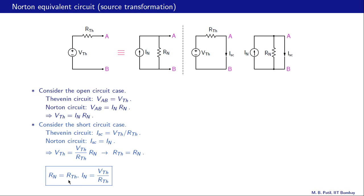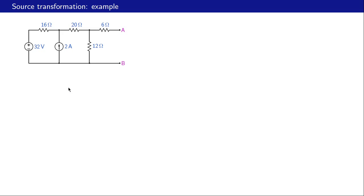To summarize the conversion: Rn equals Rth and In equals Vth divided by Rth to go from Thevenin to Norton. Similarly, to go from Norton to Thevenin, Rth equals Rn and Vth equals In times Rn. Let us now consider a problem in which source transformation — from Thevenin to Norton and vice versa — will be very useful.